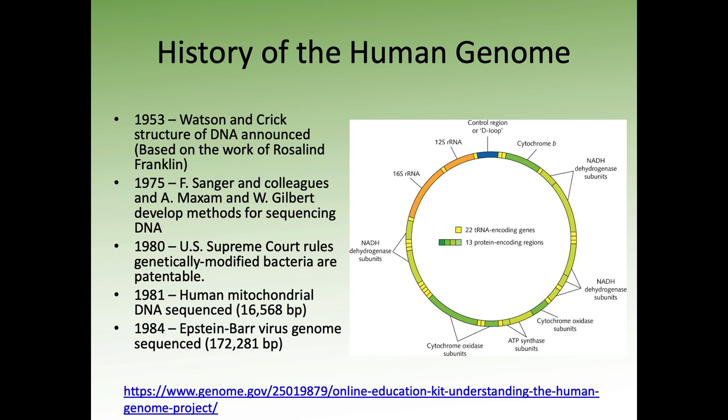Skipping over many things that happened in between — in 1975, Sanger and colleagues and Maxam and Gilbert started developing methods for actually sequencing DNA. In 1953 we could observe DNA's structure, but we couldn't tell what its sequence was. We knew it was made of nucleotides, but getting the actual sequence was really hard. By 1975, Sanger had come up with a sequencing method that eventually became the dominant method for DNA sequencing for quite a long time.